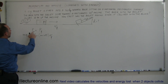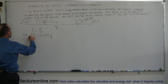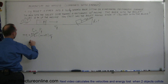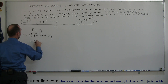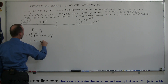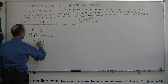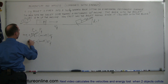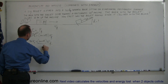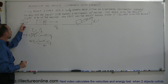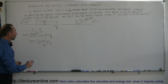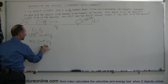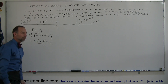The block wasn't moving when the bullet was fired into it, so that term equals zero. We can say that m·V_initial equals (m + M)·V_final. Dividing both sides by m, the initial velocity of the bullet equals the sum of the masses of the bullet and block times the final velocity, divided by the mass of the bullet.